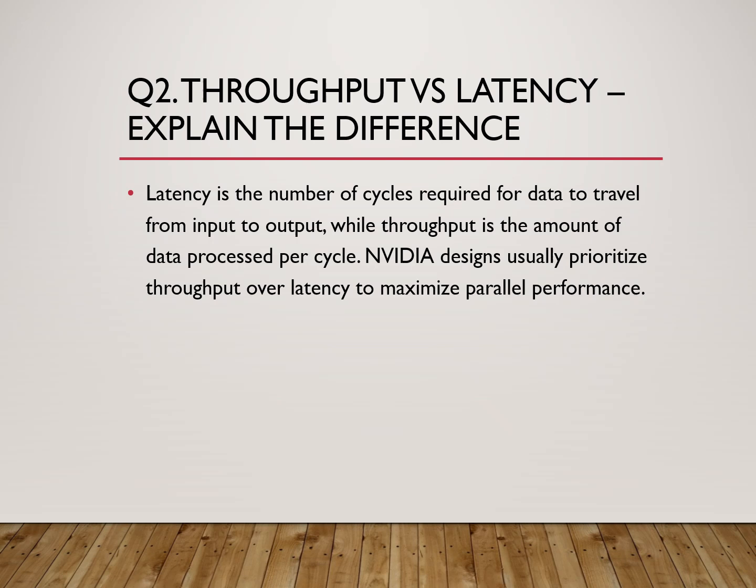Moving to question number two: throughput versus latency — explain the difference. Latency is the number of clock cycles taken for a single data item to go from input to output. Throughput is how many data items the design can process per cycle.